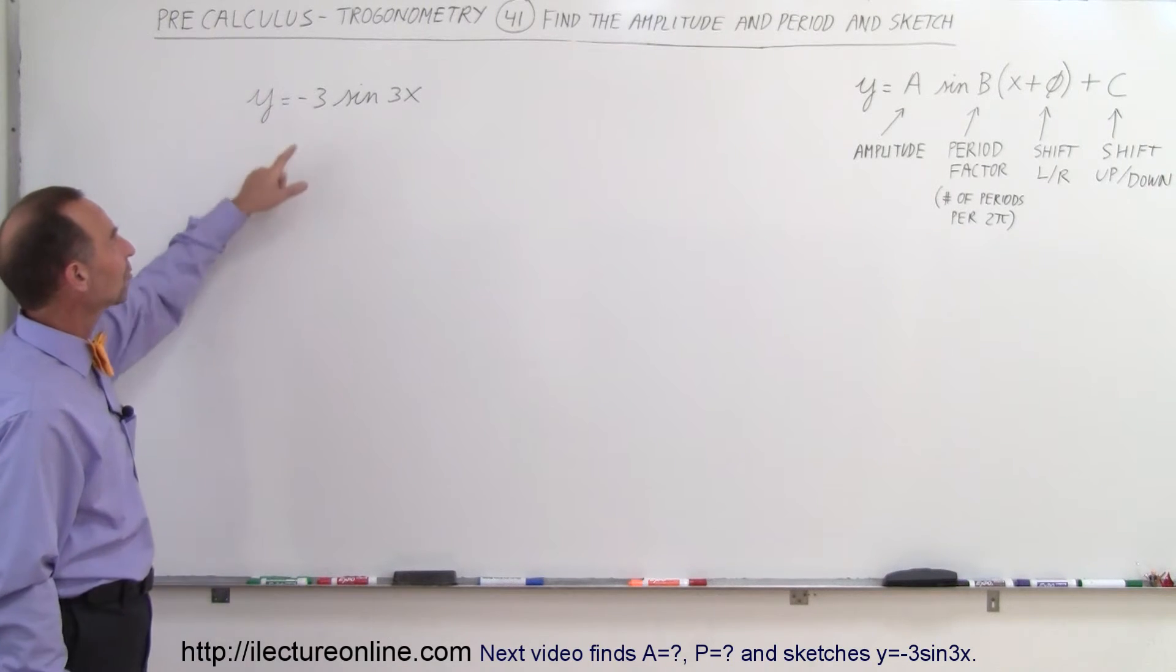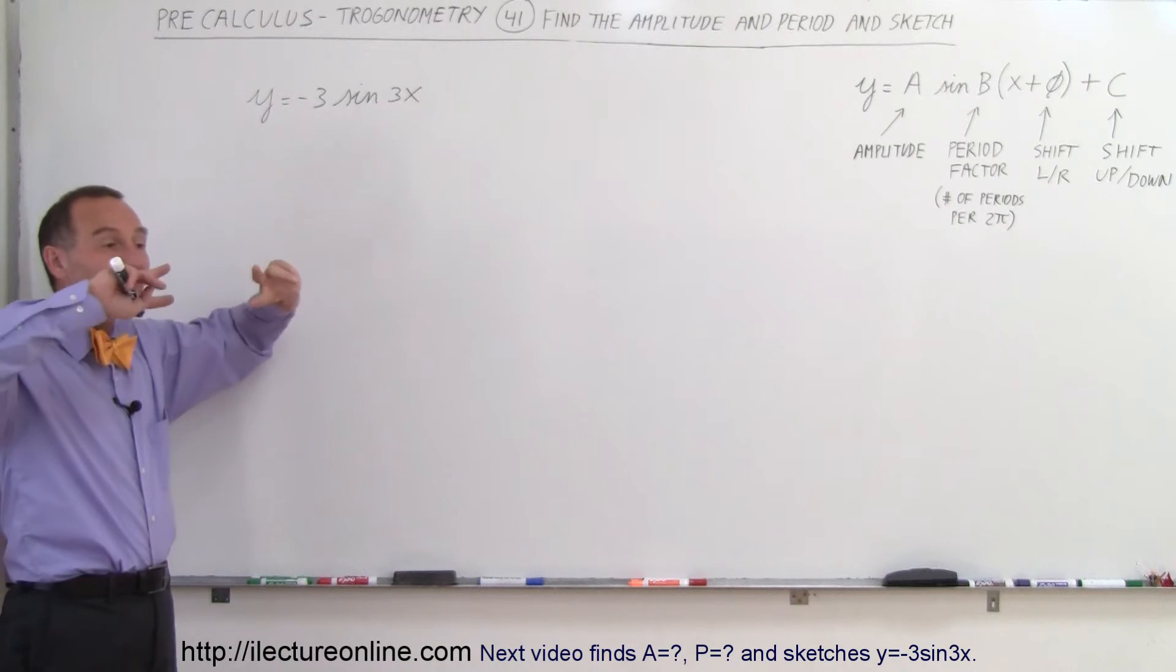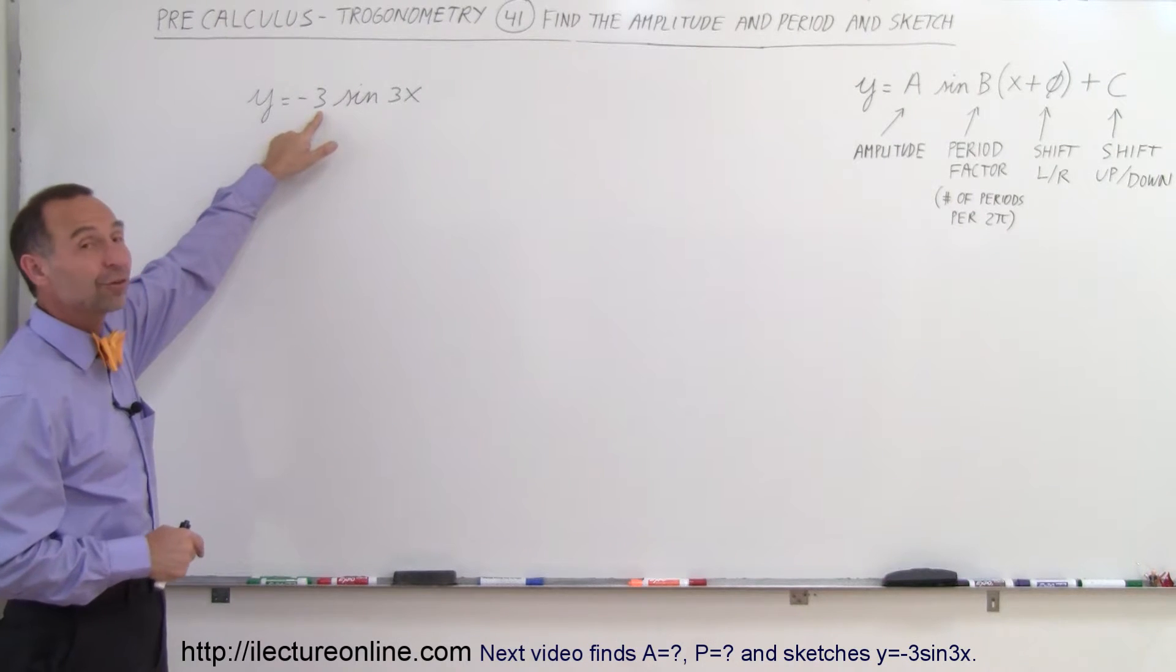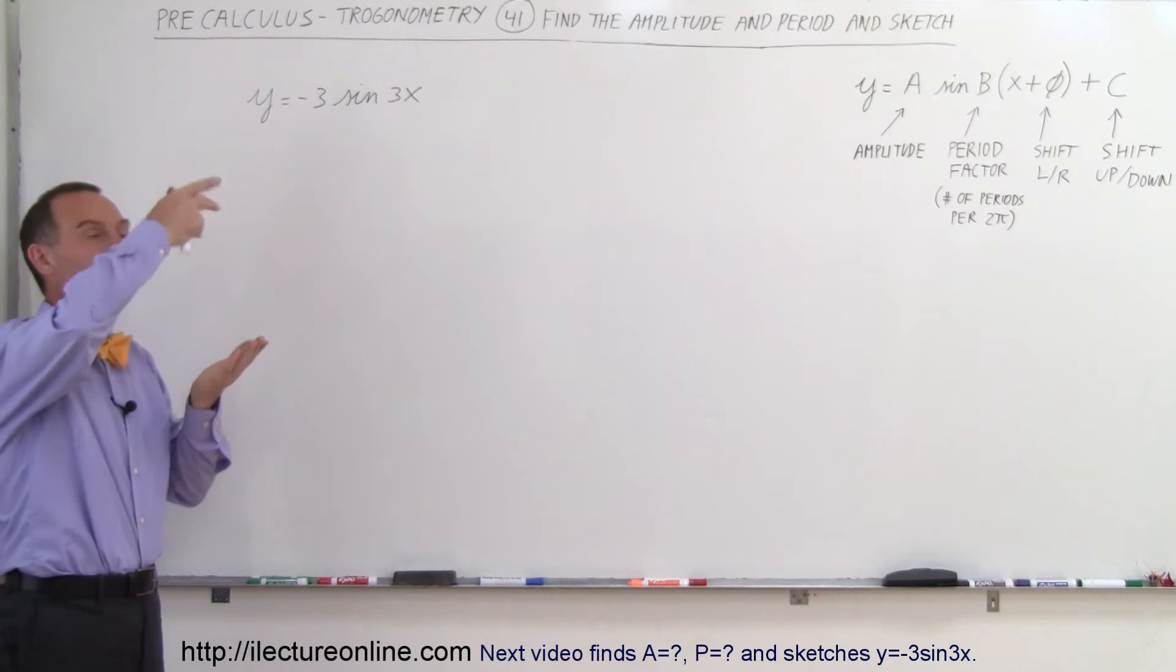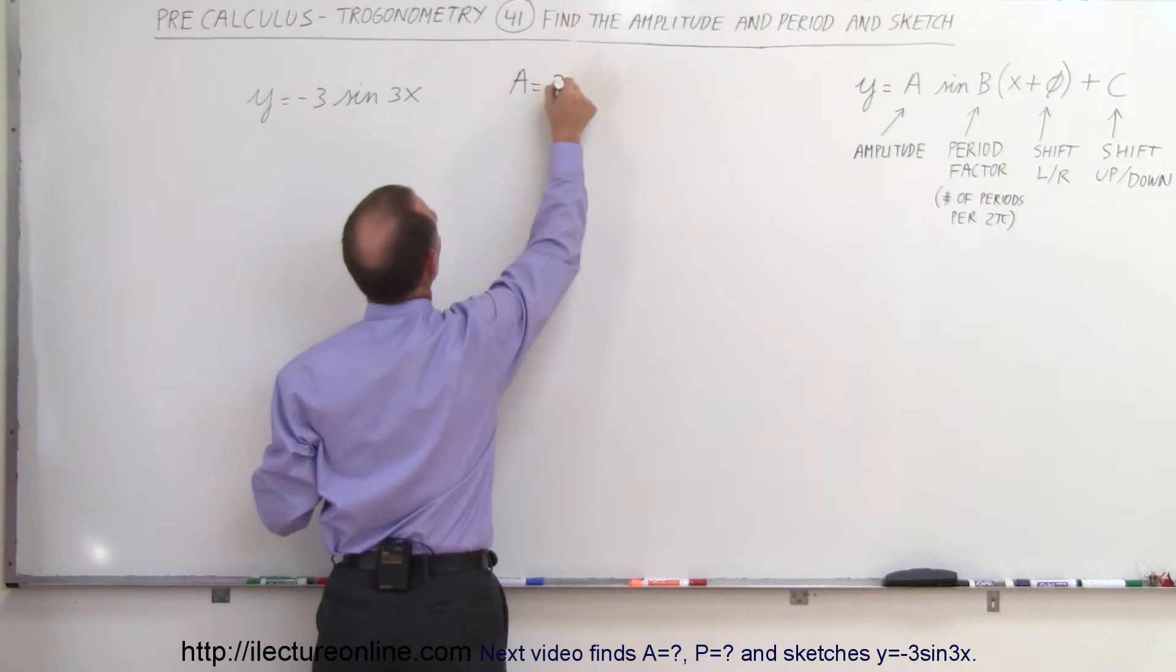So the amplitude is very straightforward, it's the number in front and notice there's a negative in front of that. So the negative simply flips the equation around so the amplitude is still the number here 3 except that it would be drawn instead of starting upward it would be drawn starting downward. So the amplitude A is equal to 3.